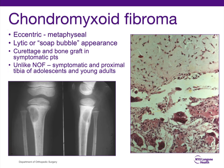Chondromyxoid fibroma is typically in the proximal tibia. It's eccentric and metaphyseal, lytic, and could have a soap bubble appearance as it is also fibrous. In symptomatic patients, you perform curettage and bone grafting. It is eccentric and metaphyseal, similar to non-ossifying fibroma, but the main difference is that chondromyxoid fibroma is seen in adolescents and young adults, tends to be symptomatic, and tends to be in the proximal tibia, whereas non-ossifying fibroma is more typically in the distal tibia or distal femur.